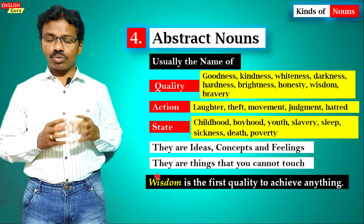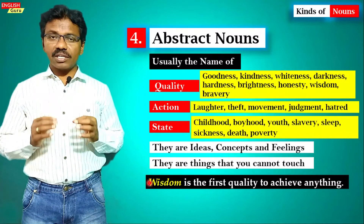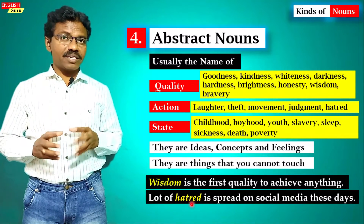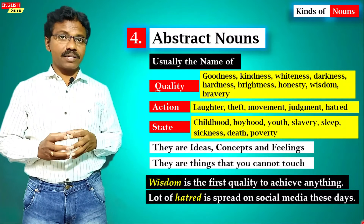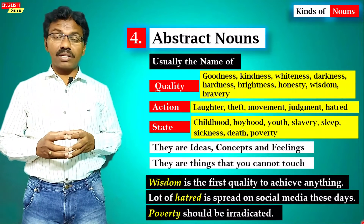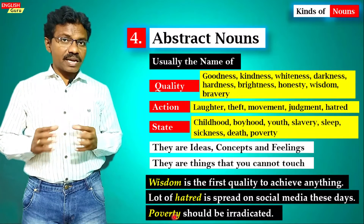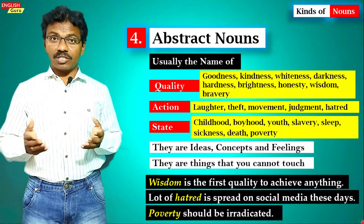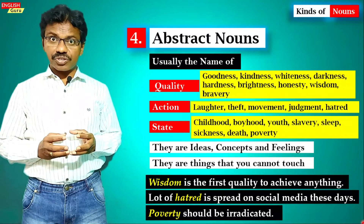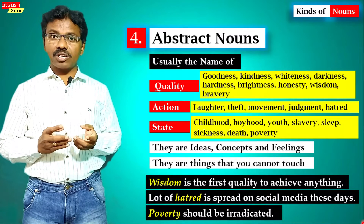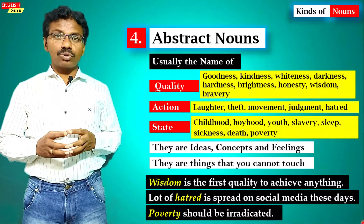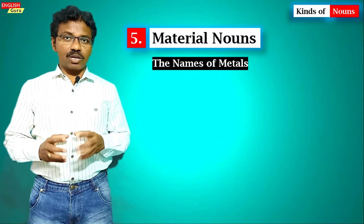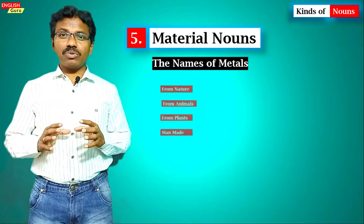'Wisdom is the first quality to achieve anything in life' — 'wisdom' is a quality, so it is an abstract noun. 'A lot of hatred is spread on social media these days' — 'hatred' is an action and also an abstract noun. 'Poverty should be eradicated' — 'poverty' is a state of being and also an abstract noun. We cannot touch wisdom, hatred, or poverty — we can only feel them, which is why they are called abstract nouns.